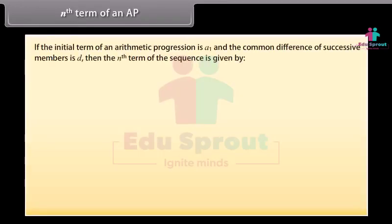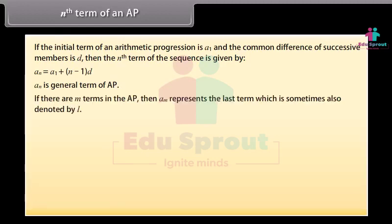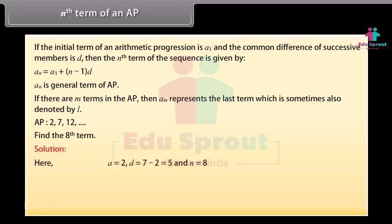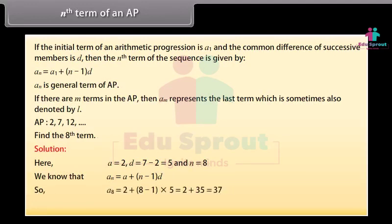If the initial term of an arithmetic progression is A1 and the common difference of successive numbers is D, then the nth term of the sequence is given by An is equal to A1 plus (n minus 1) into D. We know that An is also called the general term of the AP. If there are M terms in the AP, then AM represents the last term, sometimes denoted by L. Now, let's find the 8th term of the given AP. Here A is equal to 2, D is equal to 7 minus 2 which is 5, and N is equal to 8. So A8 is equal to 2 plus (8 minus 1) into 5, which is equal to 2 plus 35, which equals 37. Therefore the 8th term of the given AP is 37.